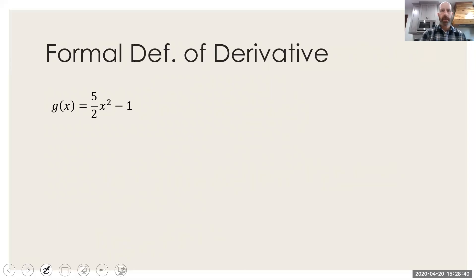The next question is about using the formal definition of derivative. So if you recall, g prime of x would be defined as the limit as h goes to zero of g of x plus h minus g of x, all over h.